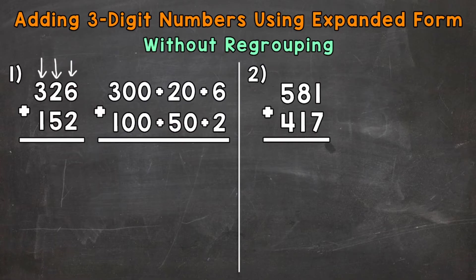As for 152, we have a one in the hundreds place, so a value of 100. A five in the tens place, a value of 50. And then a two in the ones place, so a value of two. Now that we have everything in Expanded Form, we can add. And when we add, we always start with the ones place. So six ones plus two ones gives us eight ones.